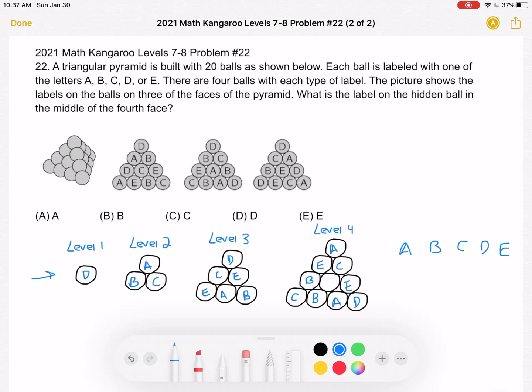We'll be able to figure out what label it has by knowing that we have a total of 20 balls and there are four balls with each type of label. So if we count the number of balls with each different letter, we'll be able to figure out which letter only has three balls and needs a fourth one.